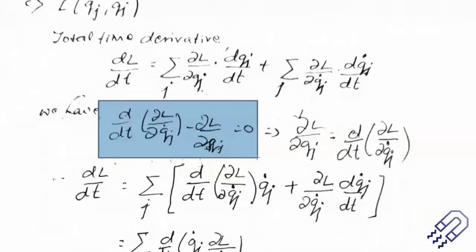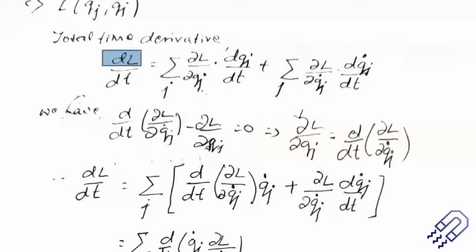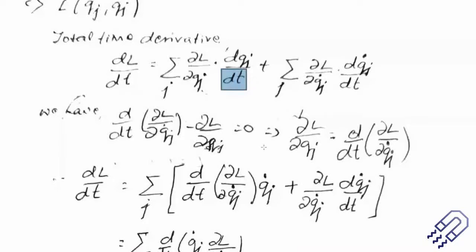We then have del L / del q_j dot minus d/dt of (del L / del q_j dot) equals zero. This gives us a useful expression. We notice that del L / del q_j dot appears in two places — the expression we have and the Lagrange equation — and since they are the same, we replace one with d/dt of (del L / del q_j dot).